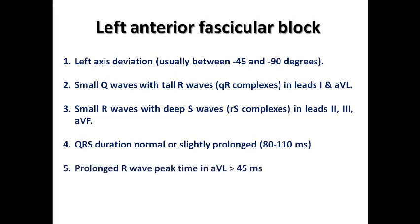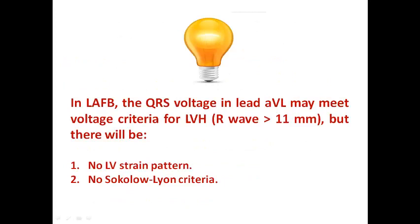We also expect the R wave peak time in AVL to be more than 45 milliseconds due to slight delay in conduction velocity, and increased QRS voltage in the limb leads. In left anterior fascicle block, QRS voltage in AVL may meet voltage criteria for LVH because the R wave amplitude may exceed 11 mm. However, this is not true LVH because there is no LV strain pattern and no Sokolow-Lyon criteria met in the chest leads.